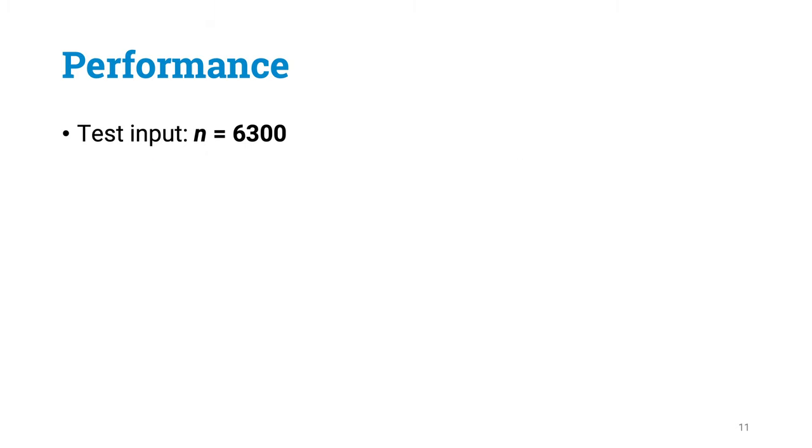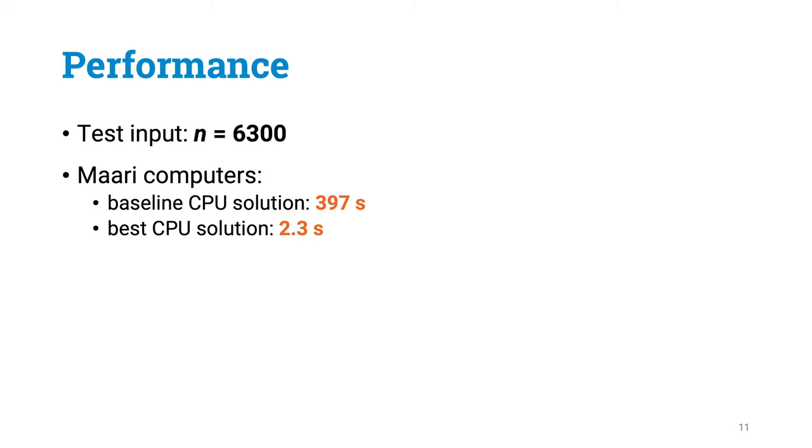So let's benchmark. We'll use a bit larger input size this time, and for n equals 6300, the baseline CPU solution took roughly 400 seconds, and the fastest parallelized CPU solution took roughly 2 seconds. So where are we now with this GPU solution?